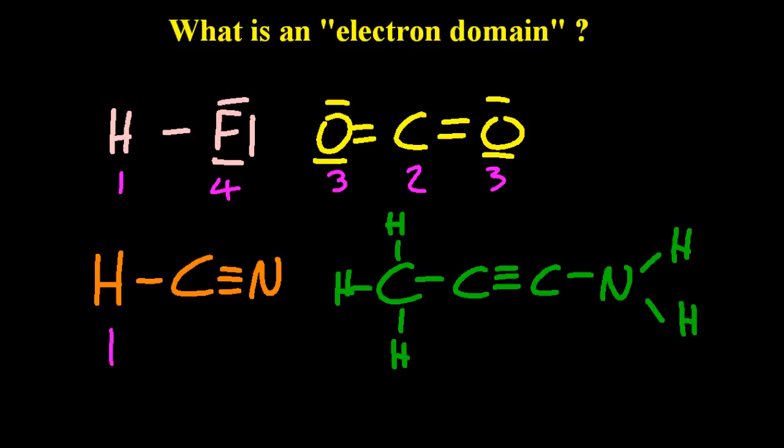So the number of electron domains seems to correspond to the number of single, double or triple bonds around an atom. But that's not quite true, because it's also the number of lone pairs too.